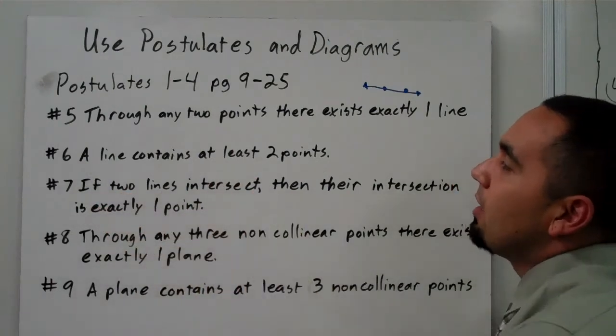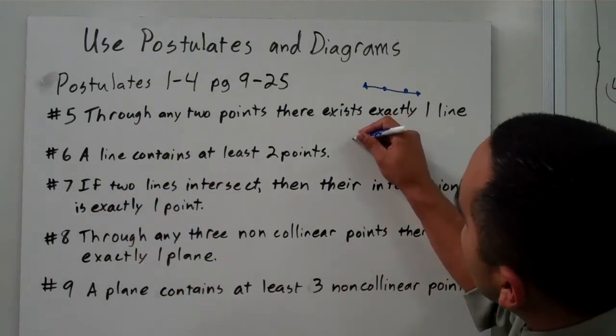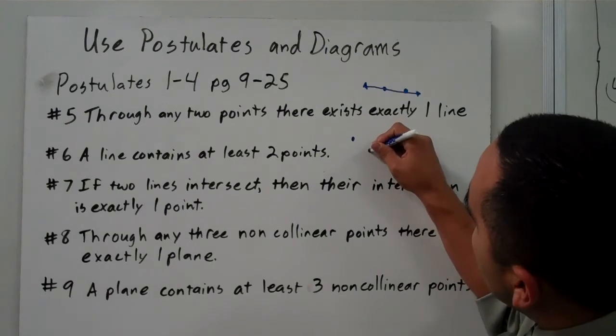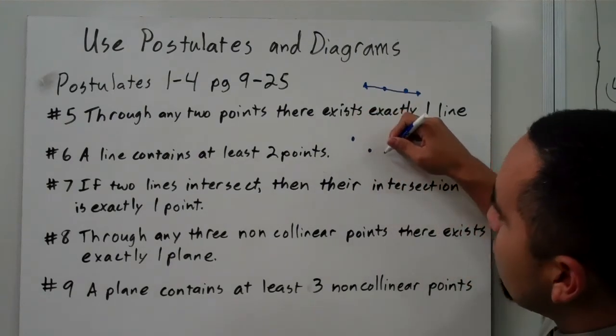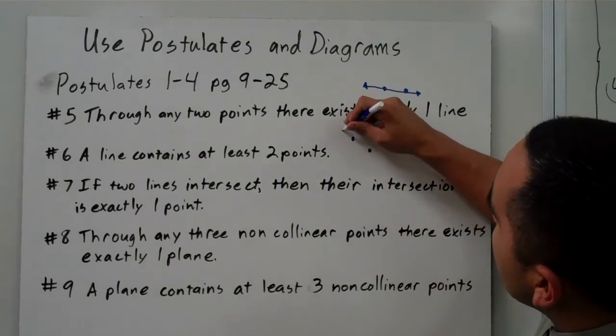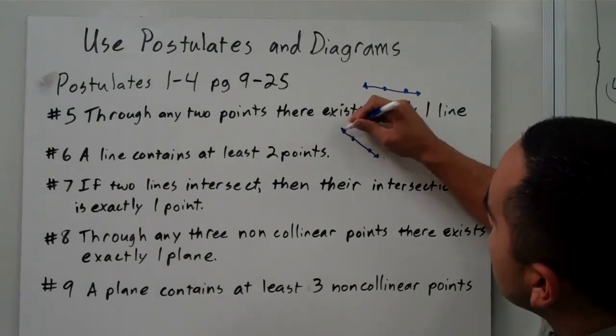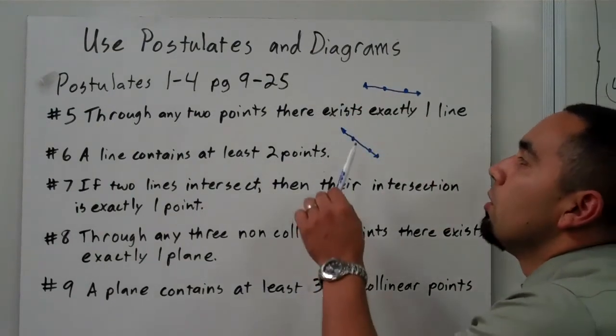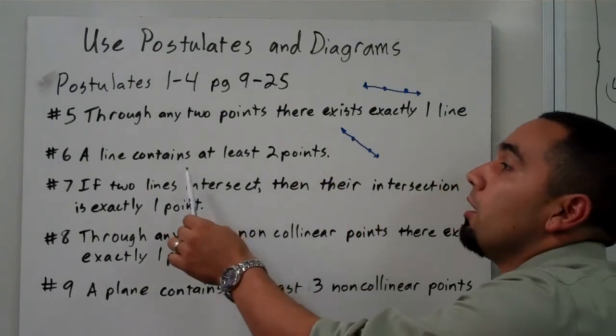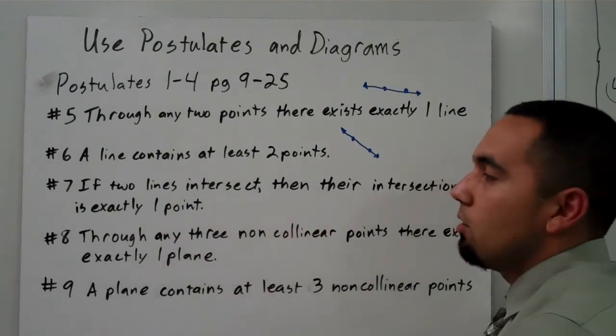Number 6, a line contains at least two points. So again, we've been using if-then form. If you have two points, then the line contains those two points at least. So a line obviously is a whole bunch more points, but a line contains at least two points.